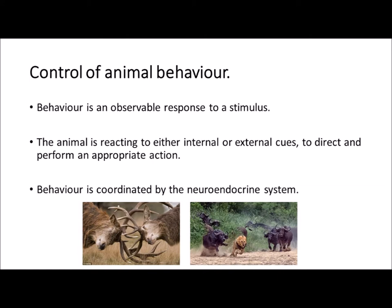What have you seen that stag doing? You've seen that stag performing a particular behaviour. Behaviour is a way of looking at key aspects of the psychology of the human and the non-human animal. Behaviour is always an observable response to a stimulus. We can see what's going on, we can measure and record that response, and we can compare that response to the variables around the animal that come from the environment and that are influencing what the animal does. The animal is interacting with internal and external cues and therefore is directing the most appropriate performance relative to that situation. Behaviour is coordinated by the link between the nervous system and the endocrine system.